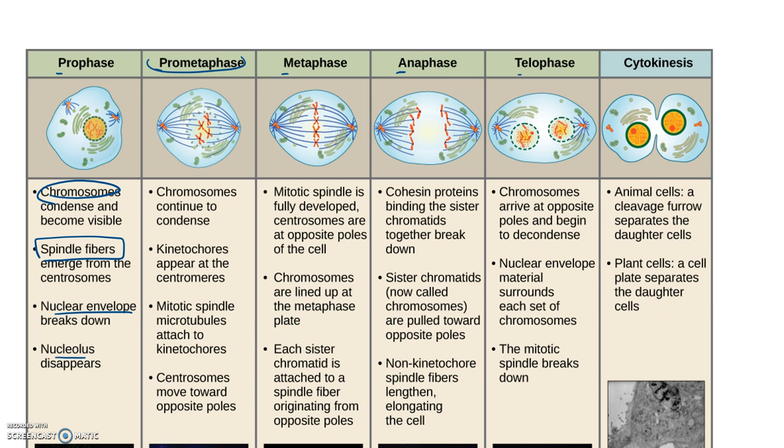So as we move on to prometaphase, this process just continued. Remember the cell, this is a continuous process for the cell. We're just marking, as certain things happen, we're saying we call this this portion of mitosis. So in prometaphase we see that the spindle is attaching to those kinetochore proteins of the centromere. So that's sort of that waist looking area where the belt might be in the chromosome. The chromosome will continue to condense even further.